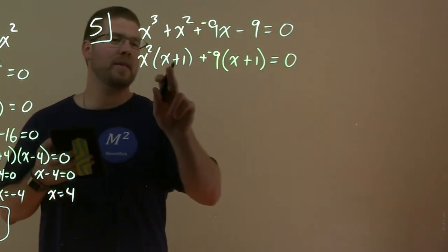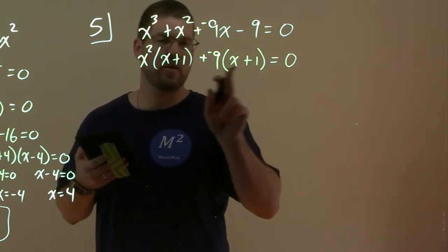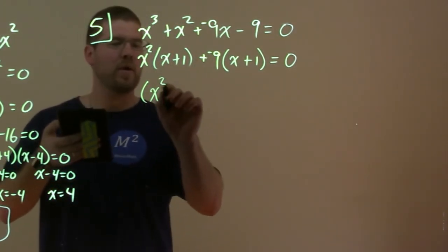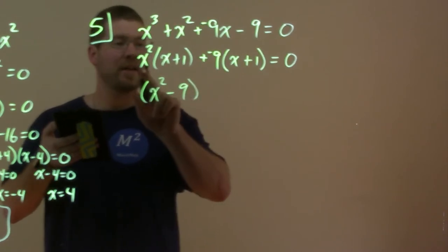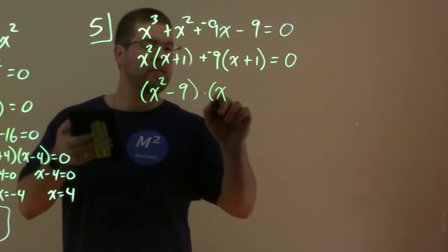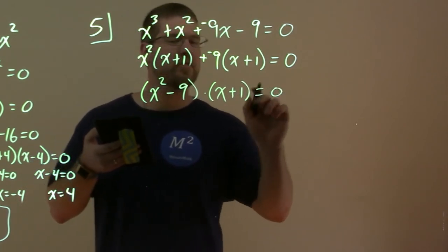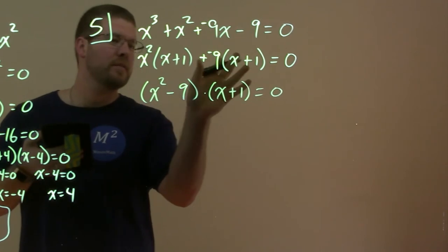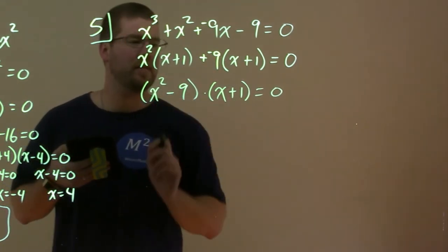And the goal of that was to make these two parts look the same. That's like the goal when you factor by grouping. So now we can write this as, well, x^2 - 9. That's x^2 plus a negative 9, right here, times (x + 1) = 0. And again, essentially, we're actually pulling out the (x + 1) from both parts, putting that here, and then the x^2 - 9 right there.